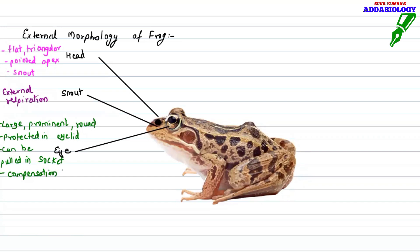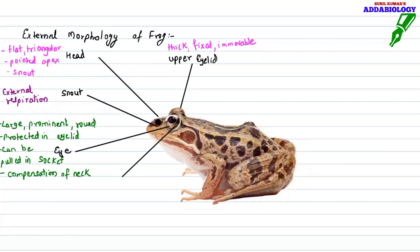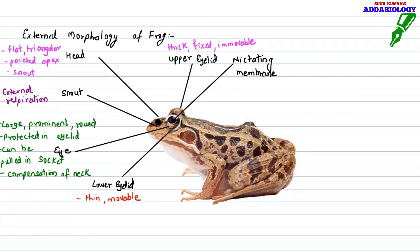Frogs have two eyelids: the upper eyelid is bulging, thick, and immovable; the lower eyelid is thin and movable. The most important feature is the nictitating membrane — the third eyelid — which is a transparent covering on the eyeball. It is vestigial in humans but in frogs it helps them see when swimming or floating in water.